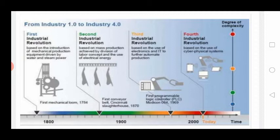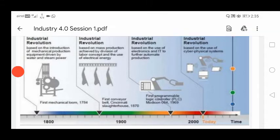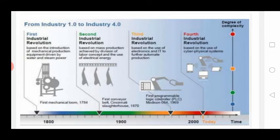The Fourth Industrial Revolution is what we are studying now, starting from around 2005–2010. It is based on the use of cyber-physical systems — essentially artificial intelligence systems. You can also see a graph showing the degree of complexity increasing across revolutions: the first was simple, the second a bit more complex, the third involved programming automation, and the fourth involves highly technical AI-driven digitalized systems.